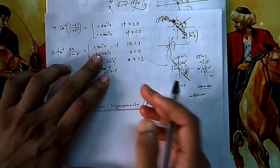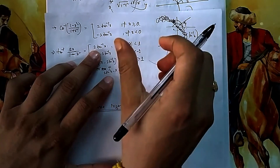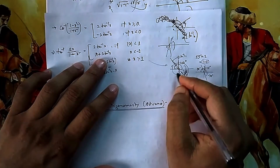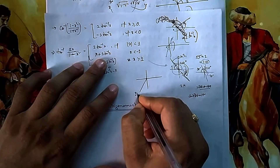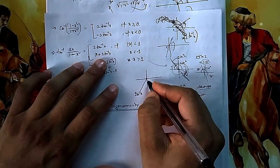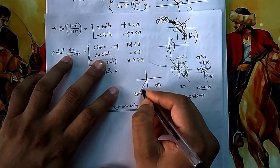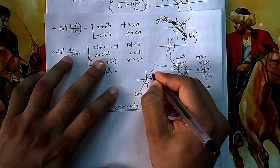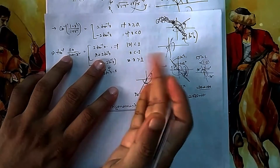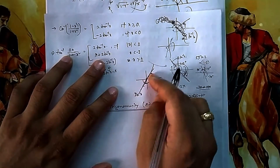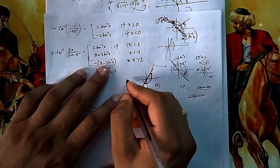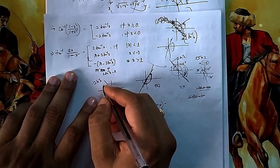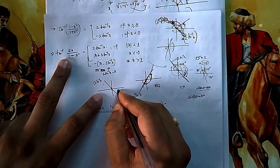For tan(2tan⁻¹x) = 2tan⁻¹x, if both angles are less than 45° it's fine. If x < −1, then 2tan⁻¹x falls in the third quadrant where tan is positive. But tan⁻¹ for positive values gives first quadrant answers, not third. If x > 1, then 2tan⁻¹x is in the second quadrant where tan is negative, and tan⁻¹ for negative values gives the fourth quadrant — so you need to adjust.